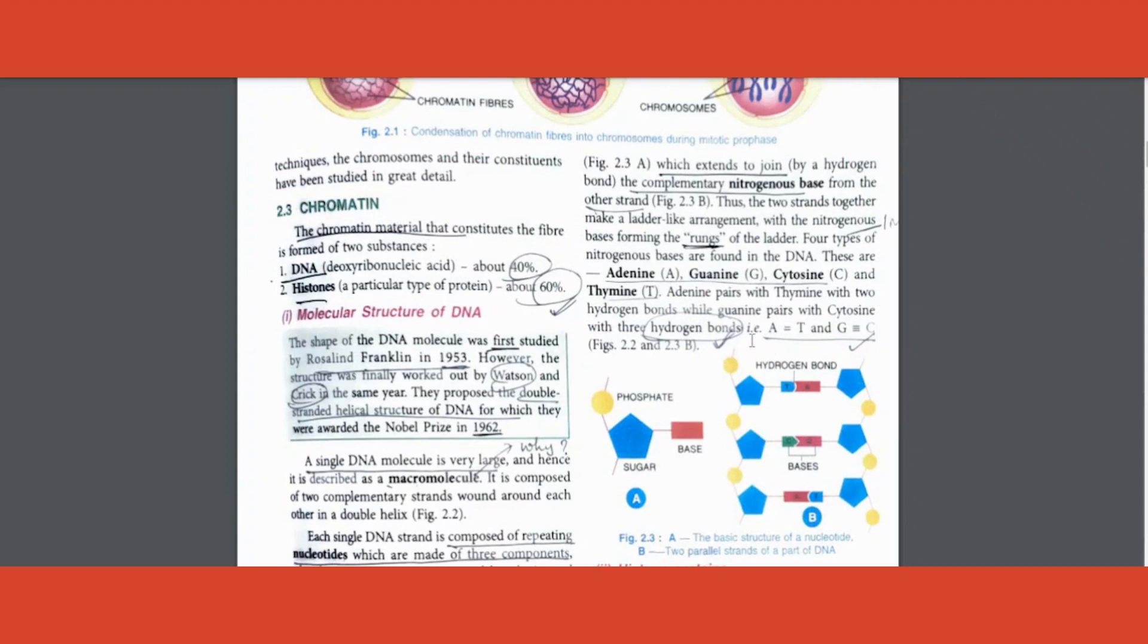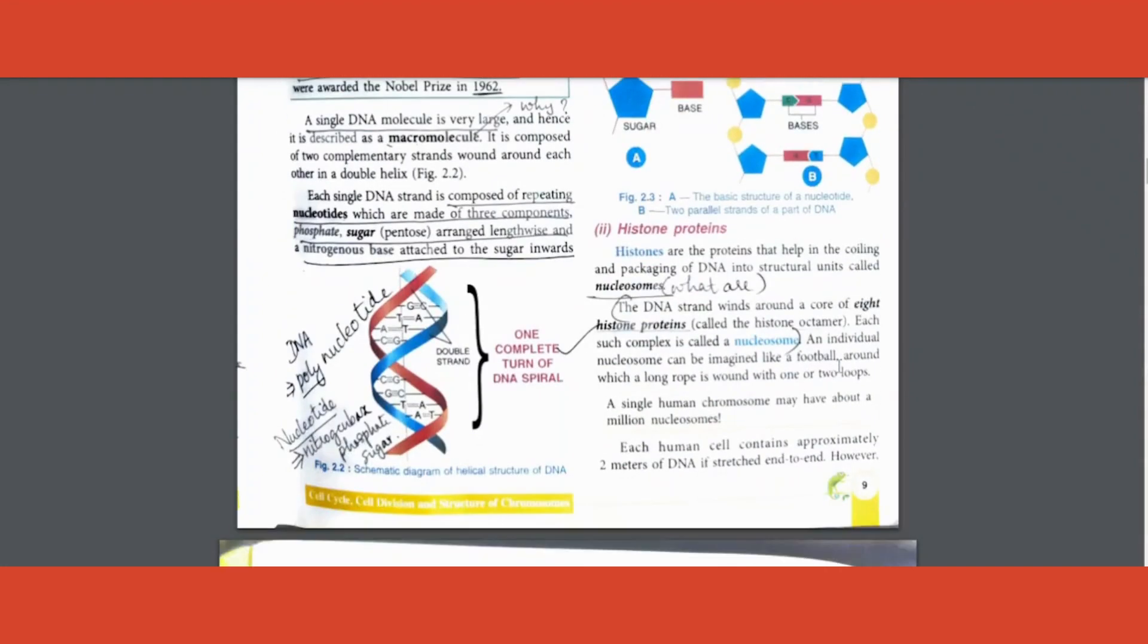Coming back to the bonding between nitrogenous bases - as you know A and T bonds together, C and G bonds together with hydrogen bonds. This is important. A and T have double hydrogen bond, and G and C have triple hydrogen bond.